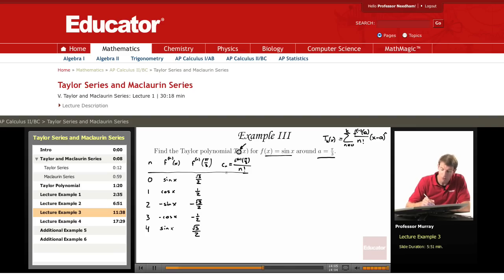Now, the coefficient cn says you take those derivative values and divide them by n factorial.